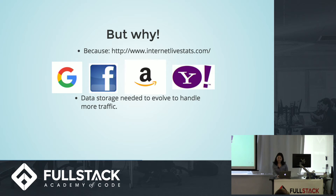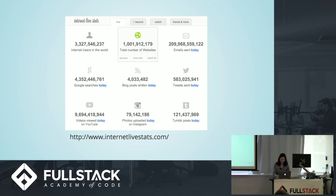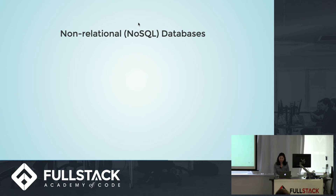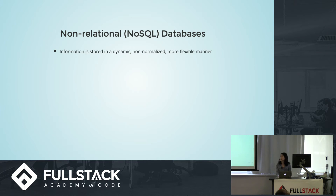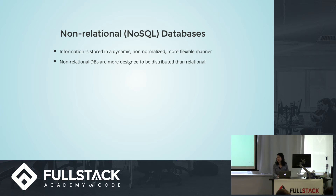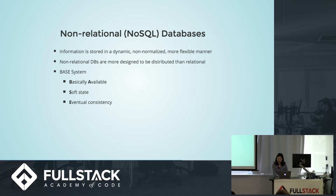Data storage needed to evolve to handle this increased traffic. In NoSQL databases, information is stored in a dynamic, non-normalized, and schemaless manner. Distributed databases means there are multiple instances of a database. NoSQL databases are designed to be distributed more than relational ones because they do not have joins, and data can be stored in a flexible manner. NoSQL databases follow the BASE system. Basically Available means everything may not be available at a given time. Soft State means there may always be changes occurring due to eventual consistency, which is achieved when the database stops receiving inputs.